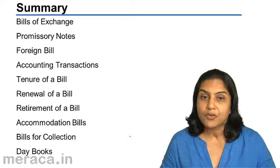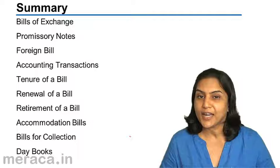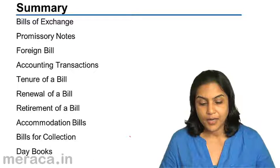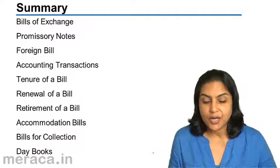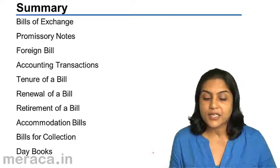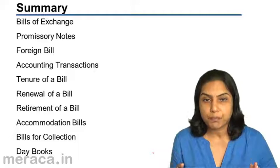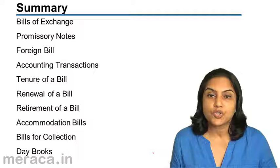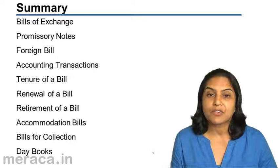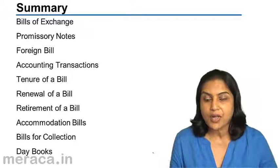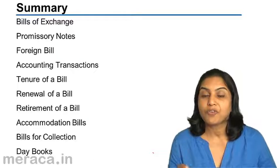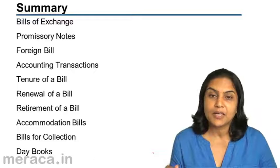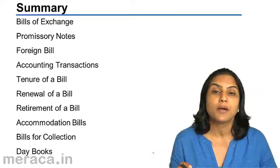We also touched upon a foreign bill, which is a bill drawn in one country but payable in another country. Then we went into the accounting transactions — the different accounting transactions depending on different situations. Once a bill is drawn and accepted, it is treated as a bill receivable in the books of the person who is to receive the money, and a bill payable in the books of the person who has to pay. Bill receivable is an asset — it represents the account of the debtor from whom money is to be collected. Bill payable is a liability representing the account of the creditor to whom payment has to be made.